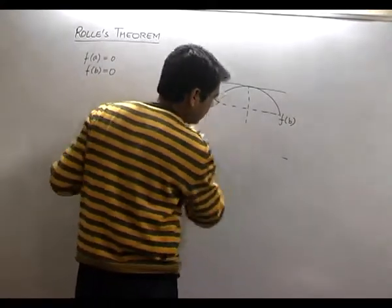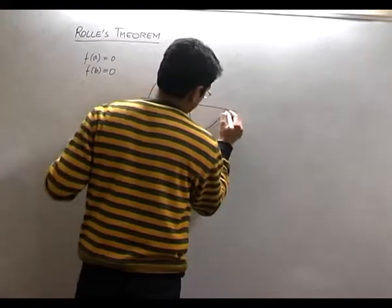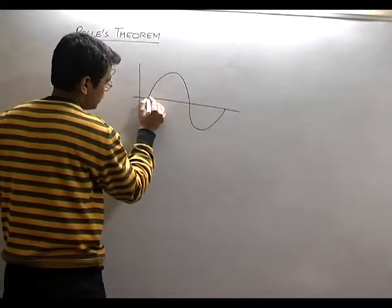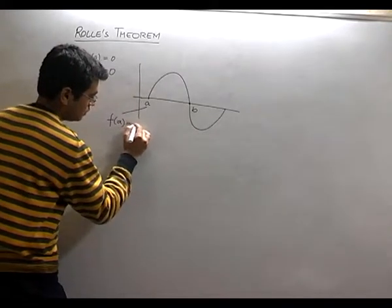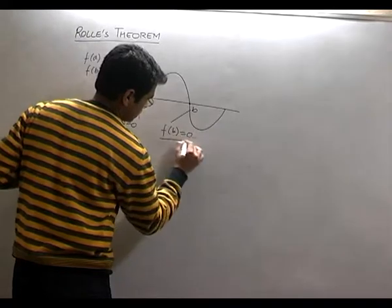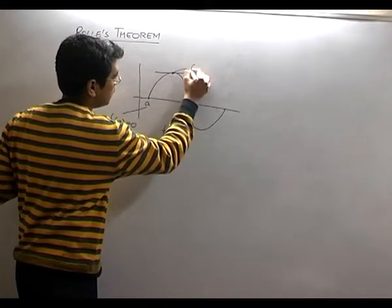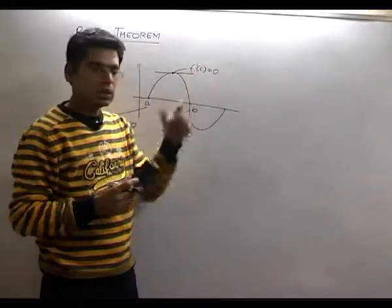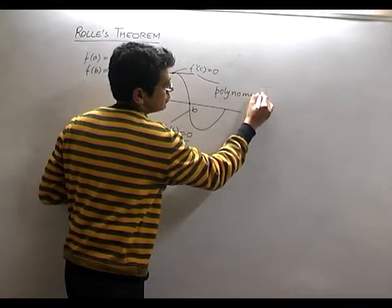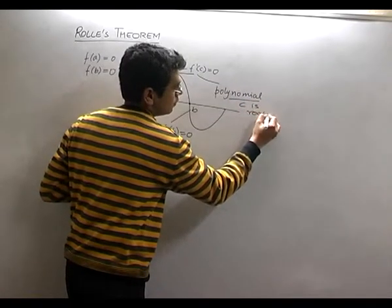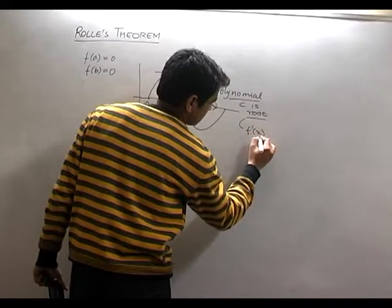That means if f(a) and f(b) are your roots — I'll show you on the curve. This is my x-axis; I mark point a and point b. So f(a) = 0 and f(b) = 0. According to Rolle's theorem, there is a point c where f'(c) = 0. So c is a root of the derivative polynomial f'(x).